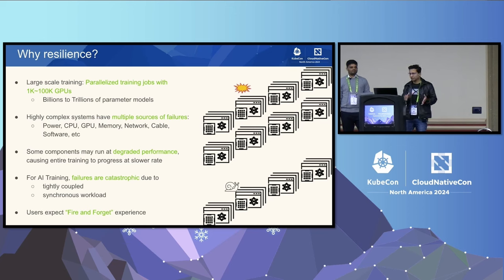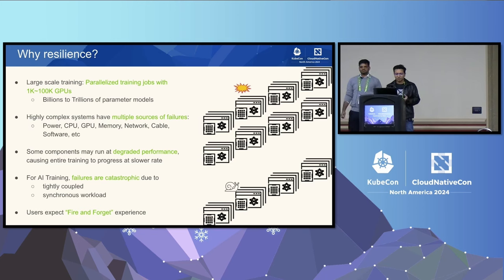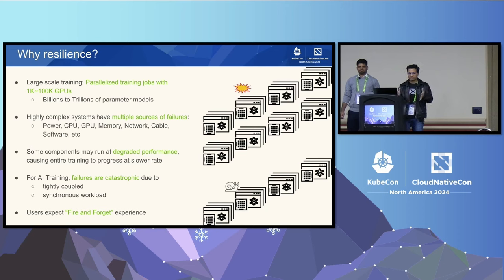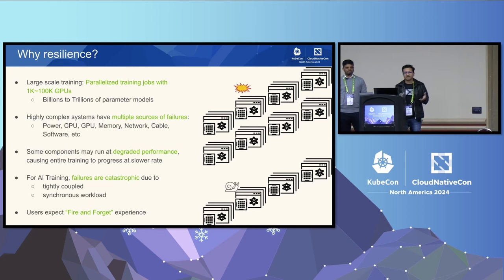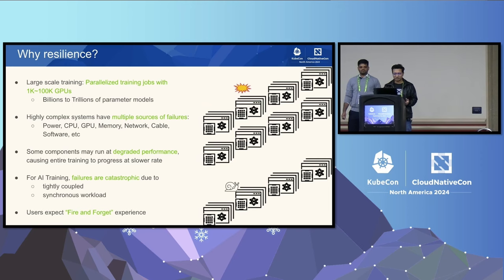Failures in LLM training are catastrophic because the training workload is a tightly coupled, synchronous workload, which means it sits at the intersection of distributed systems — which expect failures — and HPC systems, which cannot tolerate failures. Moreover, users expect a fire-and-forget experience where they just submit their job and walk away and are notified after the job completes.